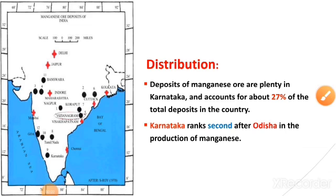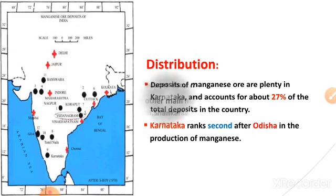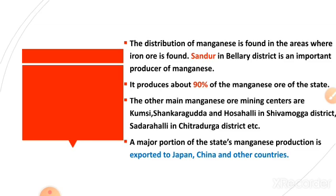Now let us study the distribution of manganese in Karnataka. Same as iron ore, Karnataka ranks second after Odisha in the production of manganese. The total production of manganese ore in Karnataka is 27% of the total production in the country. Let us now look at which particular place in Karnataka is famous for manganese mining.